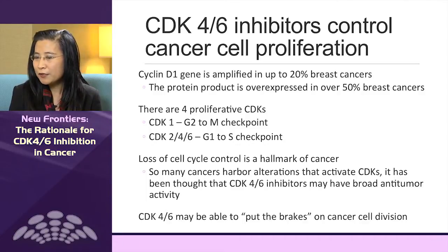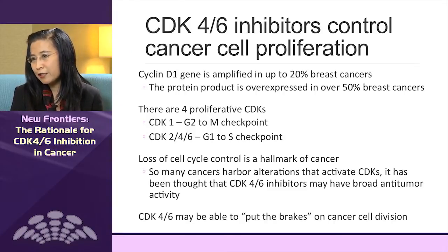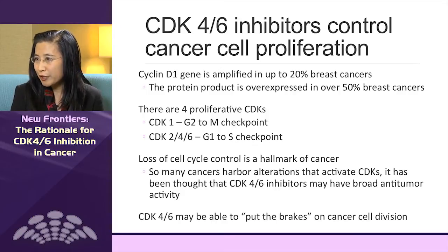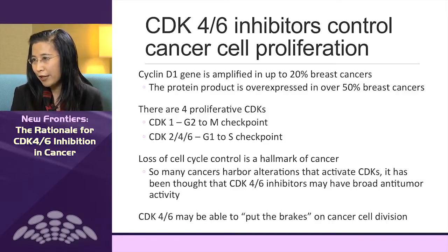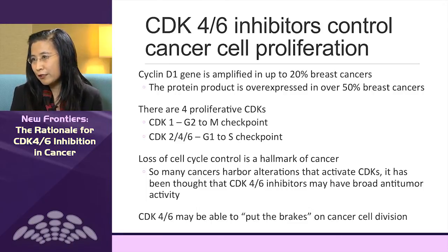How does cyclin-dependent kinase 4 and 6 inhibition control cancer cell proliferation? Many cancer cells are dependent on CDK4-6 activity. The G1 to S phase transition is critical for cell proliferation. Once a cell commits to this transition, cell proliferation continues, and deregulation of cell proliferation is a hallmark of cancer. Inhibiting CDK4-6 is therefore a promising approach to inhibiting cell proliferation.